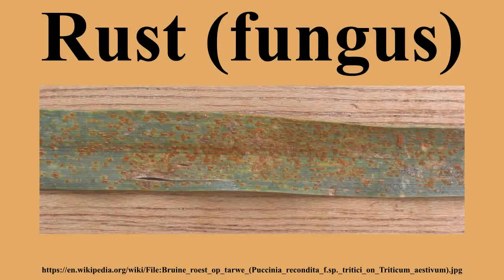All rusts are obligate parasites, meaning that they require a living host to complete their life cycle. They generally do not kill the host plant but can severely reduce growth and yield. Cereal crops can be devastated in one season, and trees infected in the main stem within the first five years by the rust Cronartium quercuum often die.